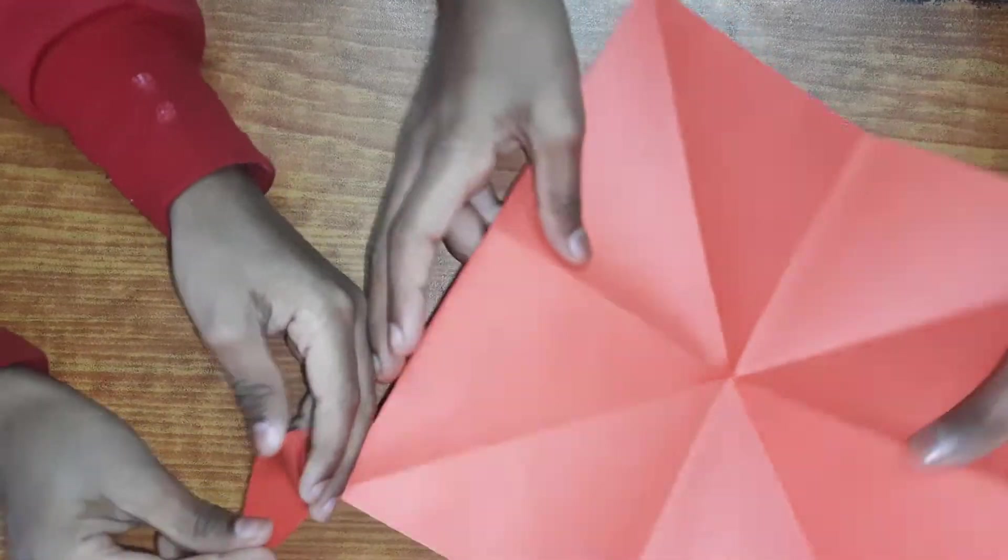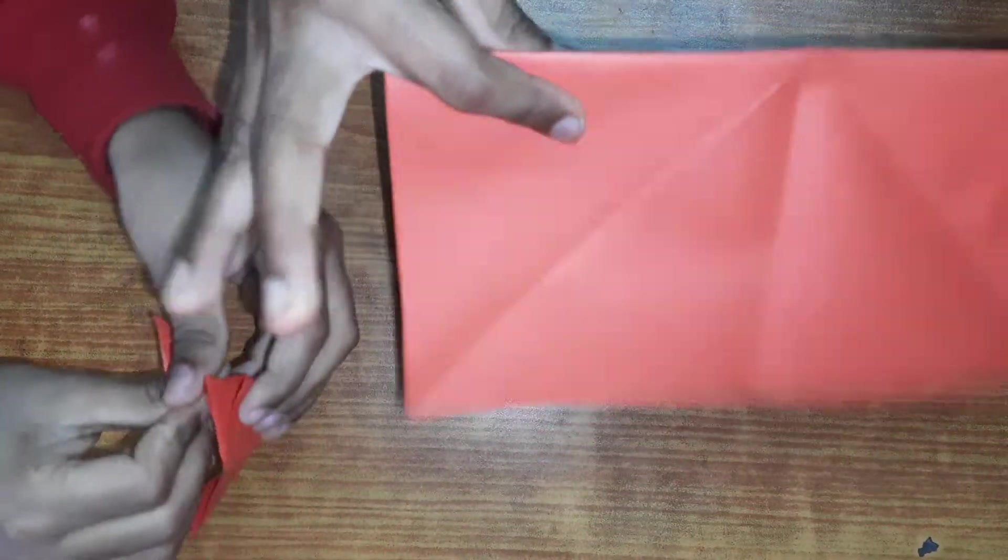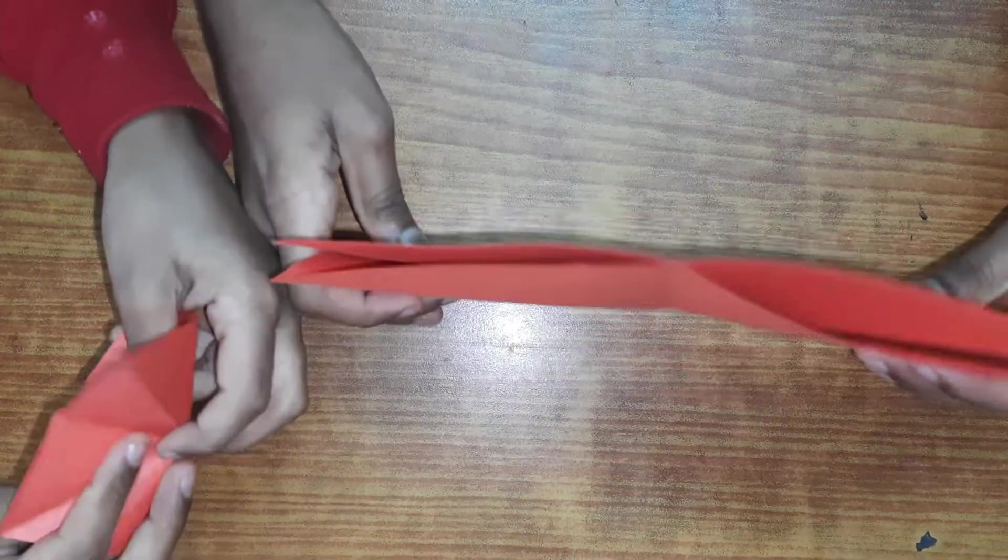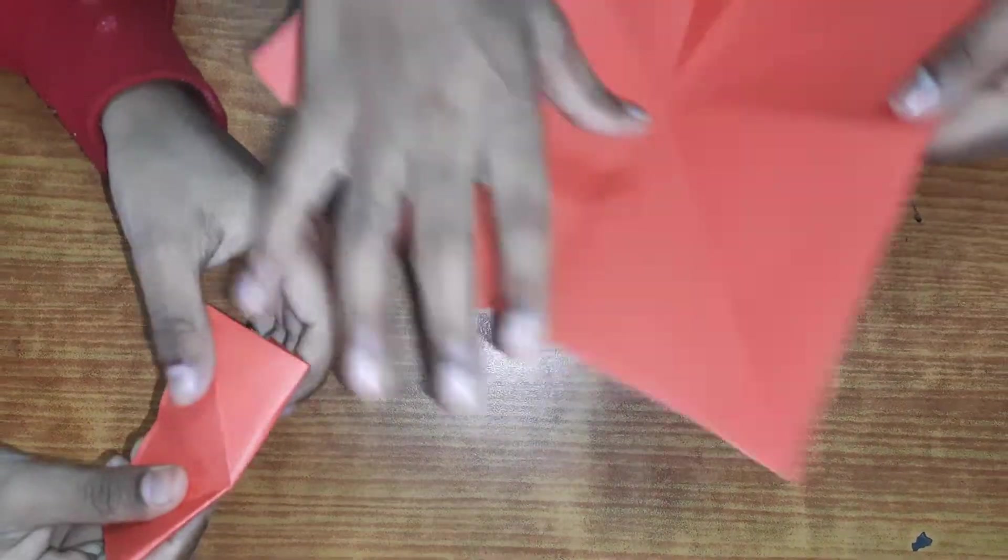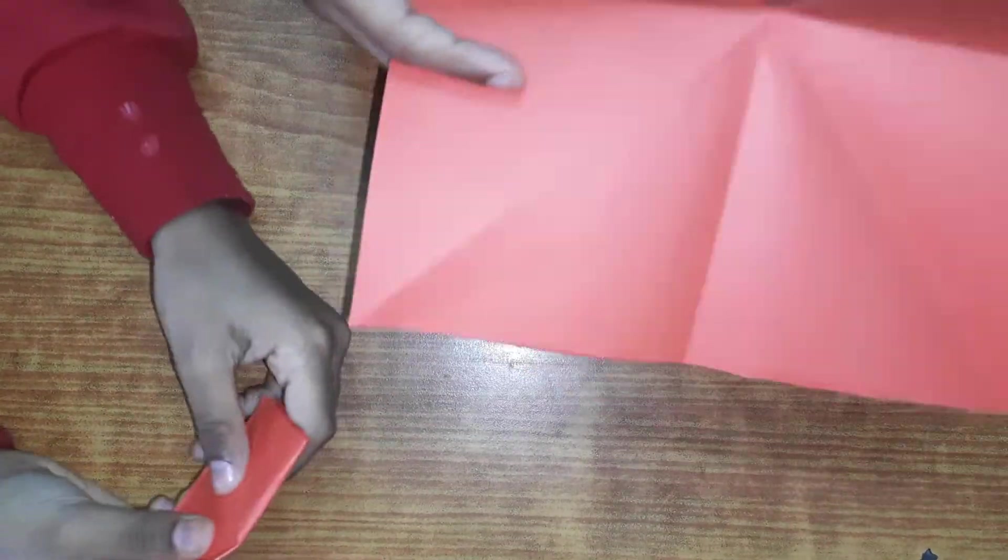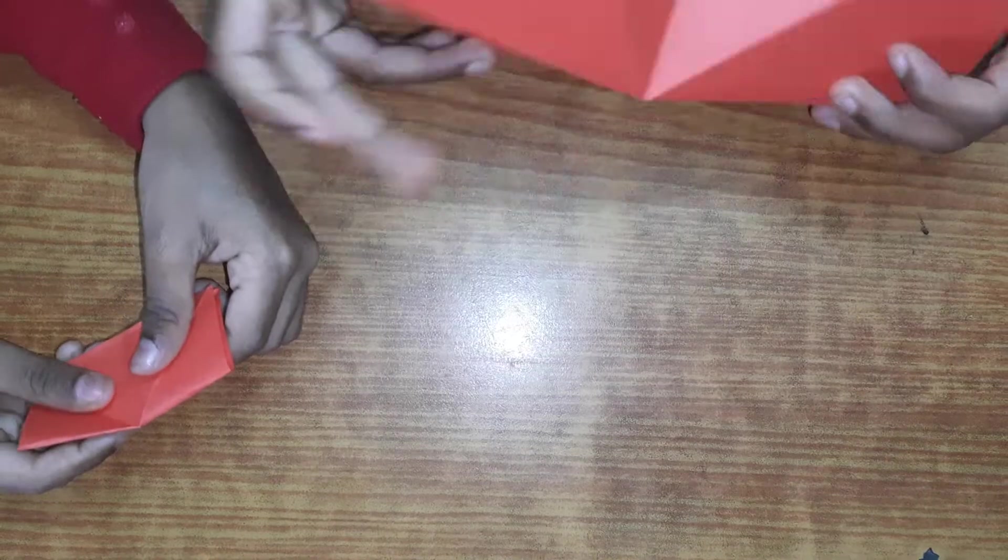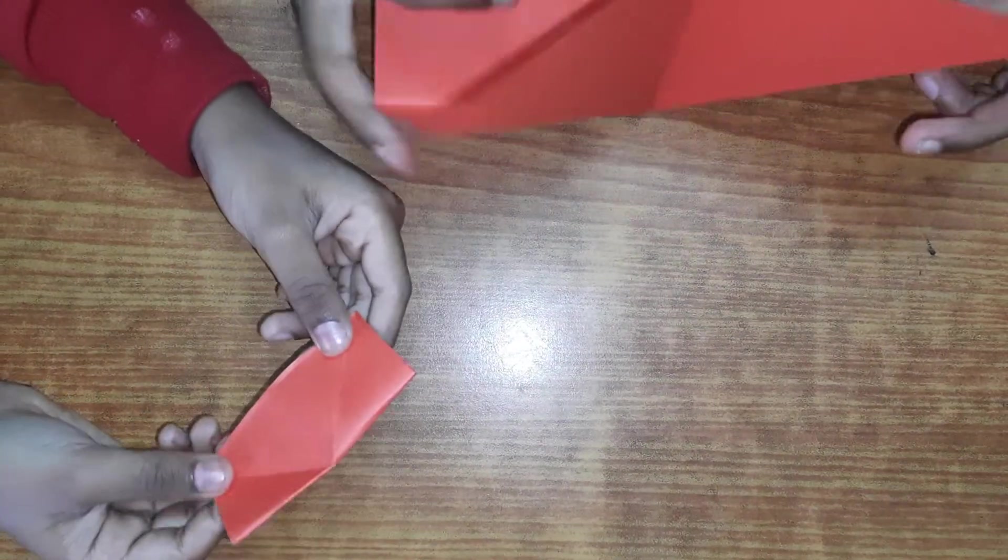And then once you did three times diagonal folds, you want to open it up. Now you want to fold it in half. See the opening side? Okay, actually I don't want that side. You know, you have to like, you know, you want to experiment with your sides a little bit.